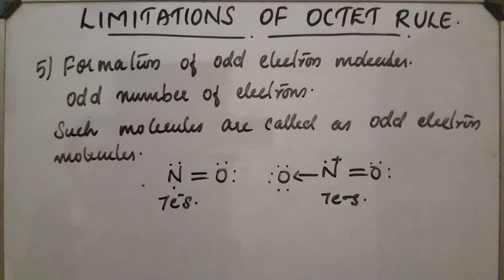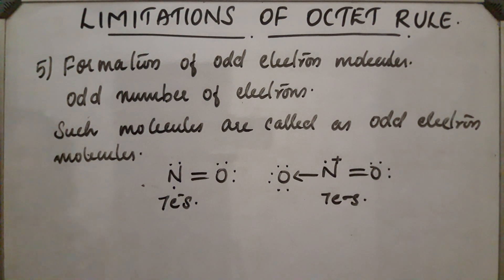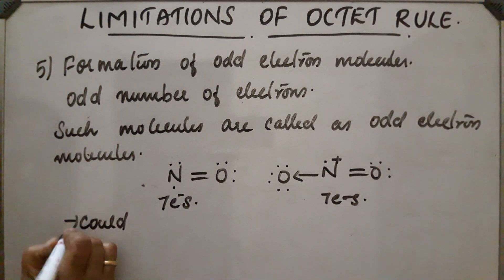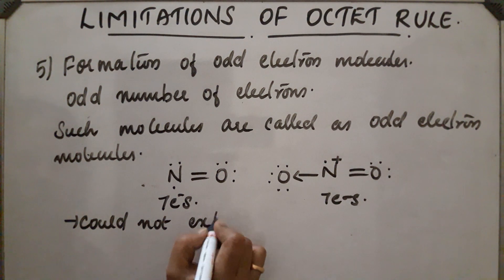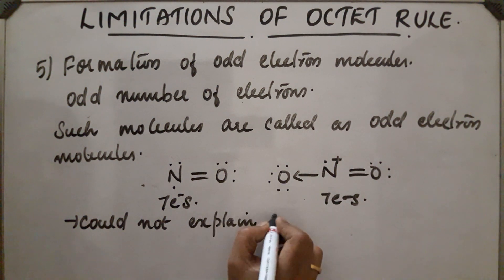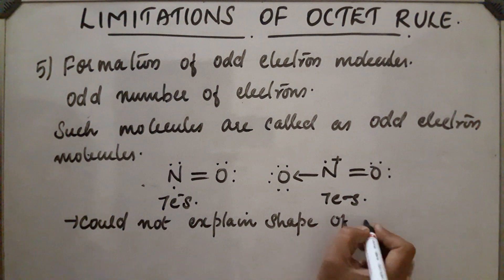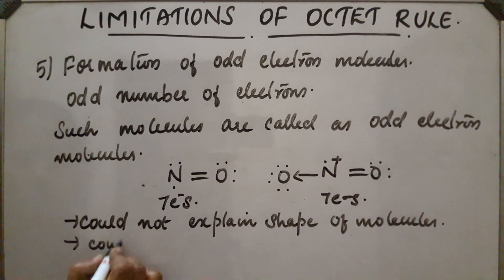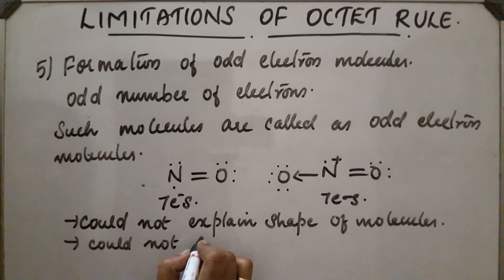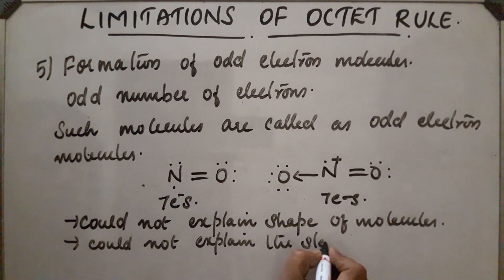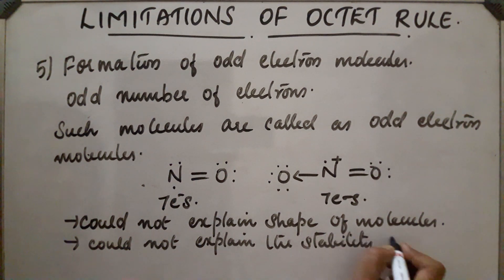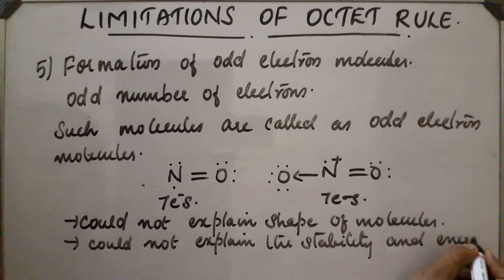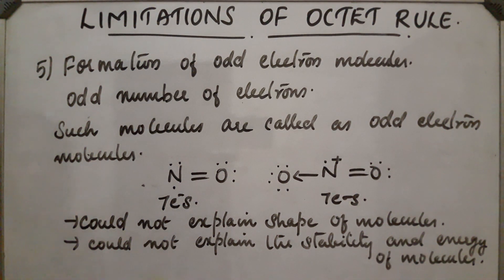These are some of the violations of the octet rule. Additionally, the octet theory cannot explain the shape of molecules, nor can it explain the stability and energy of molecules. These are the main limitations of the octet rule.